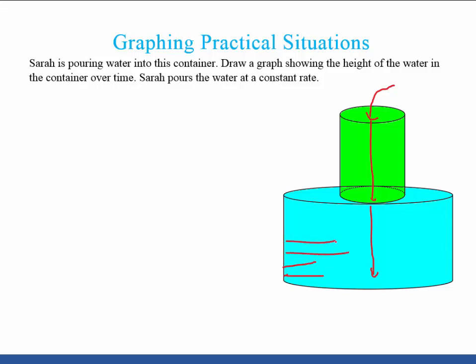And so what that is going to look like as a graph is we're going to be graphing something which has the height of the water over time. And because the height is rising at a constant rate, the graph is going to look like this. It is a straight line.